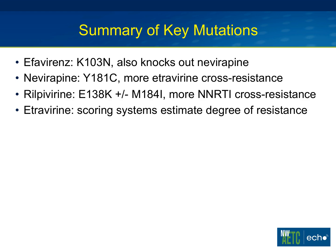To summarize: with efavirenz, K103N is the most common mutation and also knocks out nevirapine. With nevirapine, the most common mutation is Y181C, which causes more etravirine cross-resistance. With rilpivirine, E138K is the most likely NNRTI mutation, and with Complera failure, M184I often develops as well — remember that E138K causes more NNRTI cross-resistance compared to efavirenz failure. With etravirine, resistance depends on the number and type of mutations, and several scoring systems can estimate the degree of resistance.